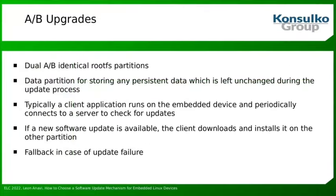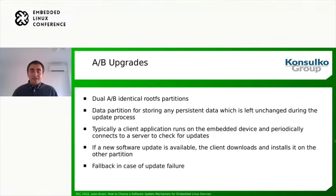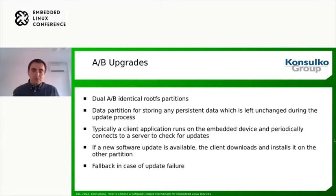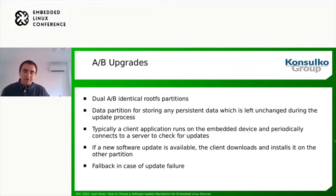Let's have a closer look at A-B updates. We have dual A-B identical root file system partitions, plus a data partition for storing persistent data which is left unchanged during the update. Typically, a client application runs on the embedded device and periodically connects to a server to check for updates. If a new update is available, the client downloads and installs it on the other partition, then switches to it by rebooting. There is a fallback in case of update failure because we always have another partition that is known to work.